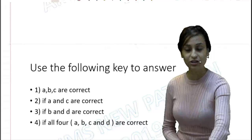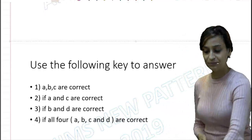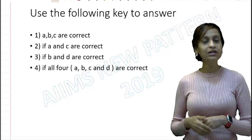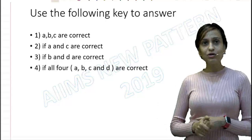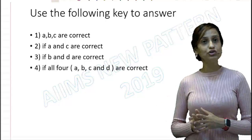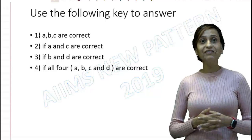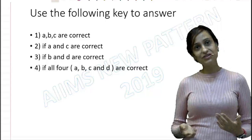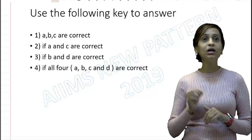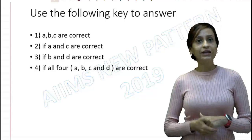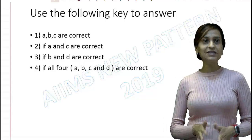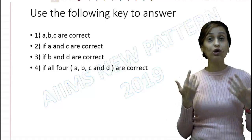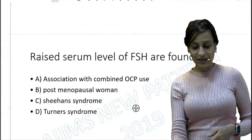Now that we have analyzed each option and know B and D are correct, let's go back to the key. Option 1 says A, B and C are correct — not right. Option 2 says A and C are correct — also not right. Option 3 says if B and D are correct, which is exactly our answer. So we will mark option number 3. That's how you are going to approach these MCQs, and this was a typical example of a multiple completion type question.